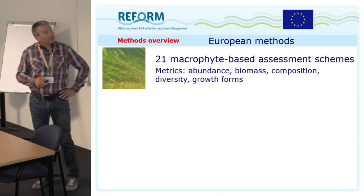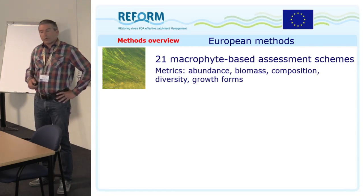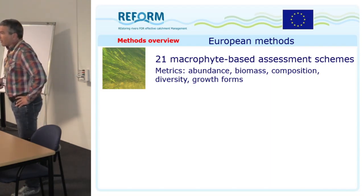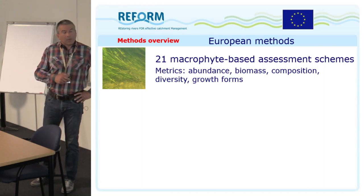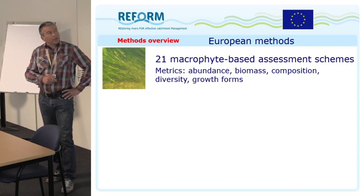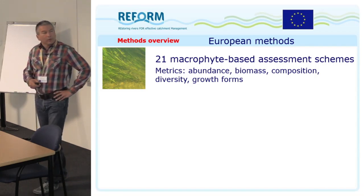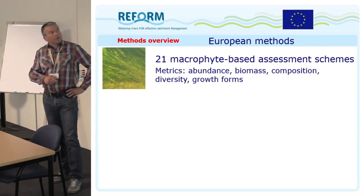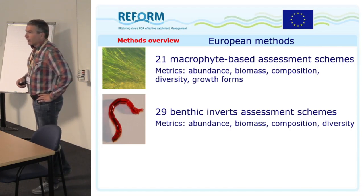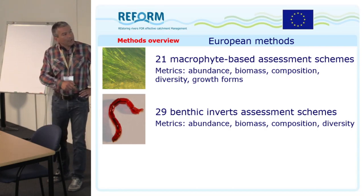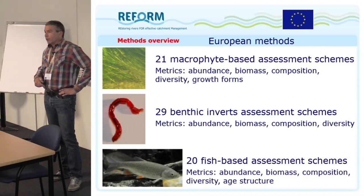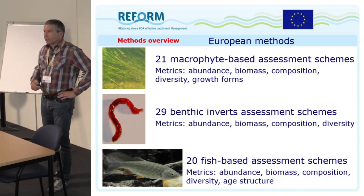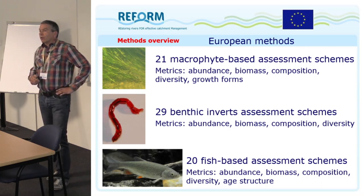Coming to specific assessment methods — in particular for the Water Framework Directive biological quality elements — there are 21 different methods assessing aquatic macrophytes; nearly every member state has its own method, but they all address the obligatory metrics: abundance, biomass, species composition, diversity, and growth forms. For benthic invertebrates, even more assessment schemes are in use with the same metrics. For fish there are 20 different assessment systems, also covering abundance, biomass, composition, diversity, and in addition — unique to fish — age structure as an indication of natural reproduction.